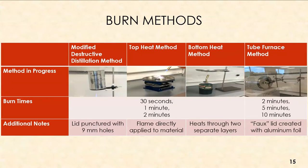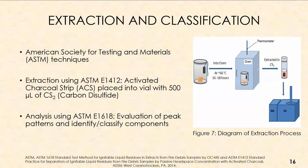After burns, I screwed a lid on and placed the sample into the oven for extraction using the ASTM E1412 method with an activated charcoal strip placed into a vial containing 500 microliters of carbon disulfide. For analysis, I used the ASTM E1618 method, which allowed evaluation of peak patterns to identify and classify different components. The oven was set at 66°C and samples were allowed to sit for 16 to 18 hours, then the activated charcoal strip was transferred to a CS₂ vial and analyzed on GCMS instrumentation.